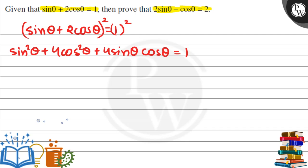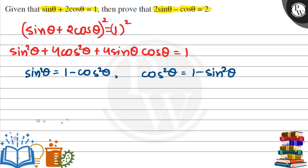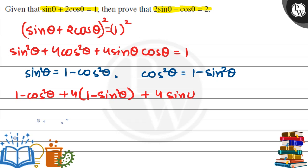We know that sin²θ = 1 - cos²θ and cos²θ = 1 - sin²θ. Substituting, we have (1 - cos²θ) + 4(1 - sin²θ) + 4sin θ cos θ = 1.